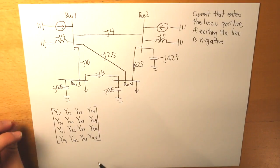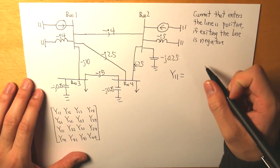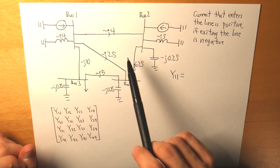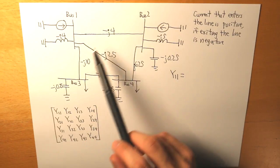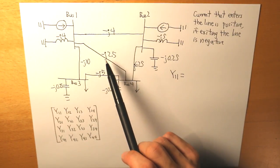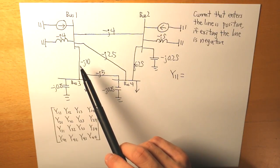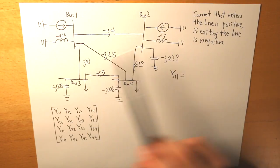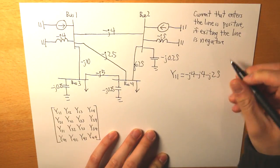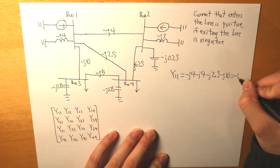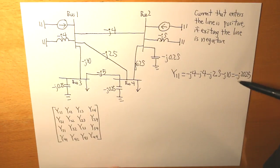For y11, we sum all the currents entering bus 1: we have negative j4, negative j4, negative j2.5, negative j10, and negative j4. Summing these up, y11 equals negative j20.25.